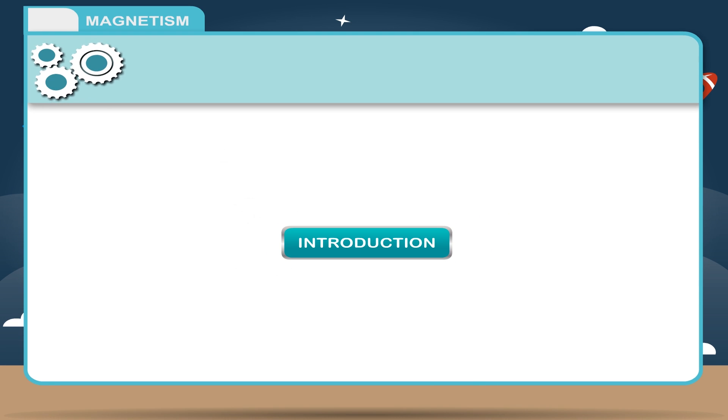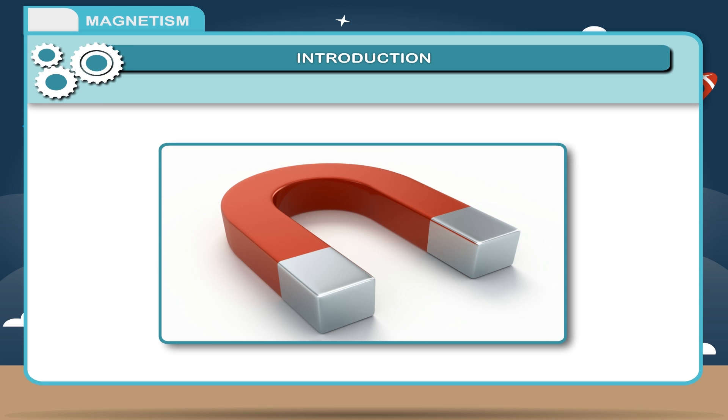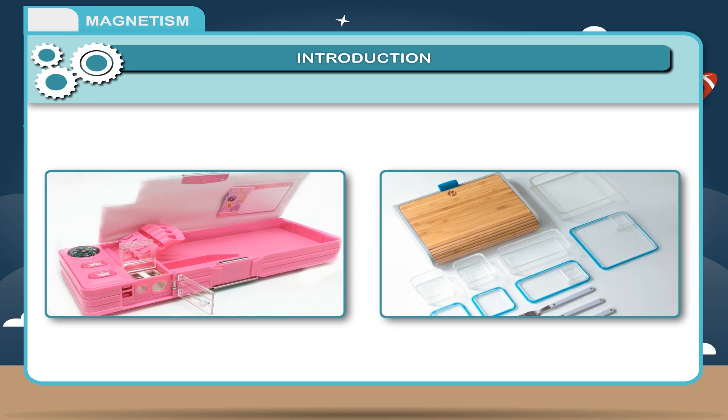Magnetism. Introduction. What happens when you close the door of your refrigerator? It gets drawn and stuck even without a bolt or a lock. Why does it happen so? Simple. This happens due to the presence of a magnet. Even a few pencil boxes or tiffin boxes have this arrangement for fitting the lid.